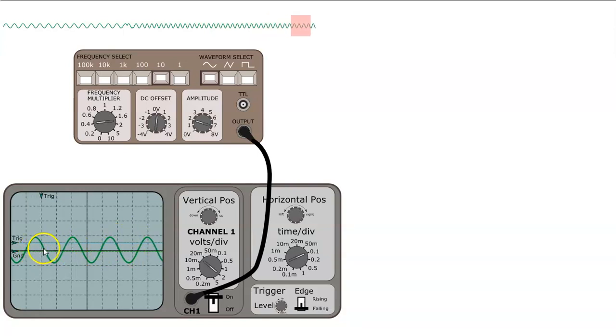But basically what happens when we're triggering is that we're still taking a snapshot of the waveform but we're imposing an additional constraint. We're making sure that the voltage reaches a particular level at a particular time so the waveform will appear to be stationary.